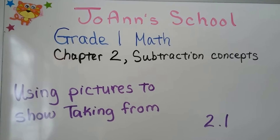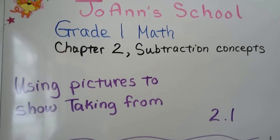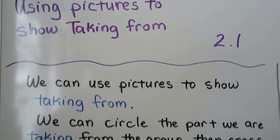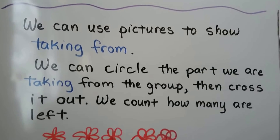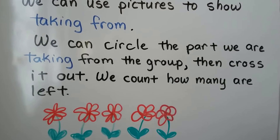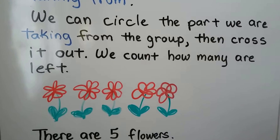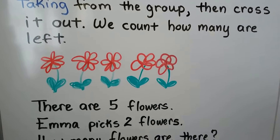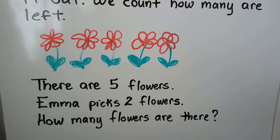Using pictures to show taking from — lesson 2.1. We can use pictures to show taking from. We can circle the part we are taking from the group, then cross it out. We count how many are left.